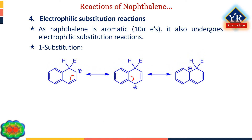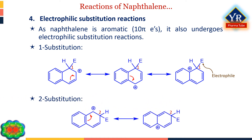As naphthalene is aromatic with 10 pi electrons, it undergoes electrophilic substitution reactions. Electrophilic substitution usually occurs more readily at the 1-position than at the 2-position because the intermediate for 1-substitution is more stable. The most favorable resonance structures for the intermediate are those that have one fully aromatic ring. The positive charge can be distributed over two positions leaving one aromatic ring unchanged, whereas only one resonance structure is possible for the 2-substitution intermediate that retains a benzenoid bond arrangement.